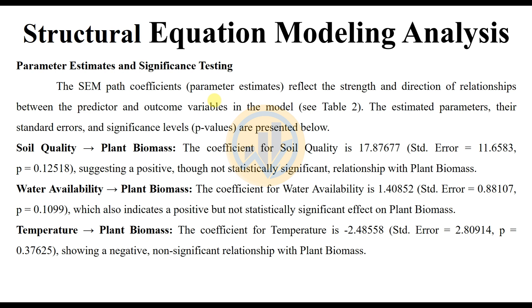The coefficient for Water Availability predicting Plant Biomass is 1.40852, with a P value of 0.1099, which also indicates a positive but not statistically significant effect on Plant Biomass. For Temperature predicting Plant Biomass, the coefficient is minus 2.48558, with a P value of 0.37625, showing a negative, non-significant relationship with Plant Biomass.